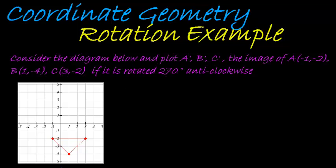So here we're given a description that we are rotating A, B, and C rotated 270 degrees anti-clockwise. Now to go and do it anti-clockwise and see where this is going to end up is actually very difficult.